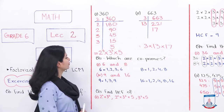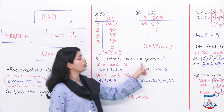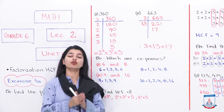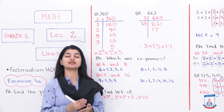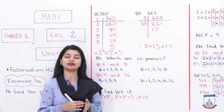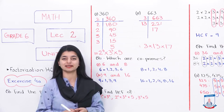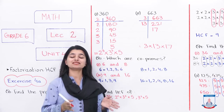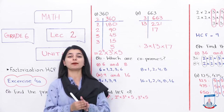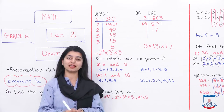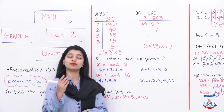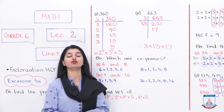Then we look at question number 2: which are co-primes? This is a term we haven't heard before. Co-primes are numbers that have only one common factor between them, which is one. If they have any common factor other than one, we will not call them co-primes. So co-primes are two or more numbers whose only common factor is one. To check, you write their factors and see if they share any common factors.